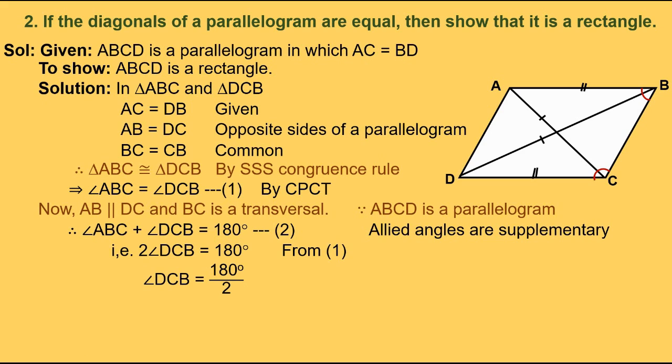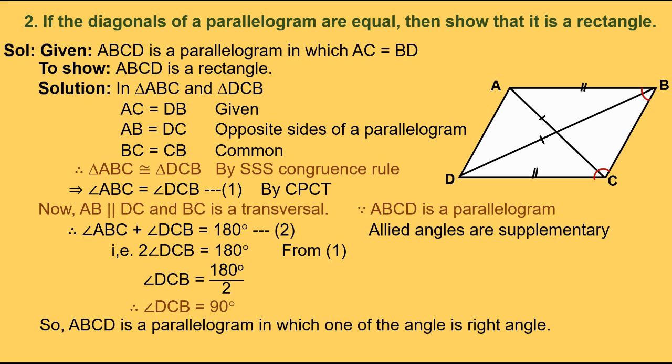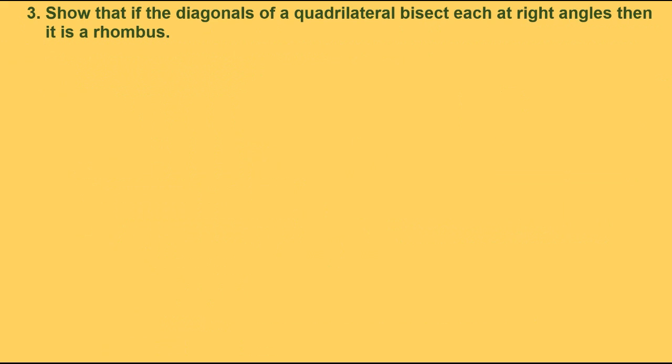Therefore, angle DCB equals 90 degrees. So ABCD is a parallelogram in which one of the angles is a right angle. Thus, ABCD is a rectangle. Now let's solve problem 3.